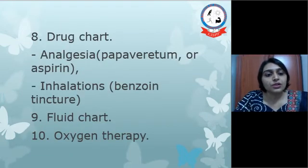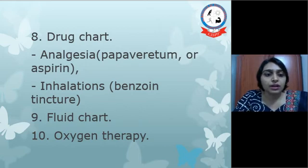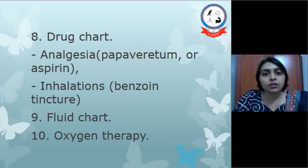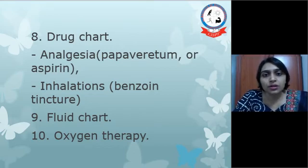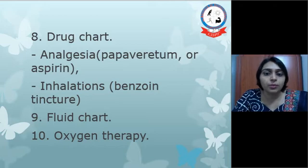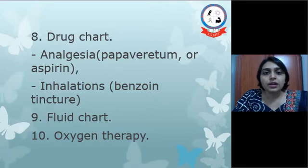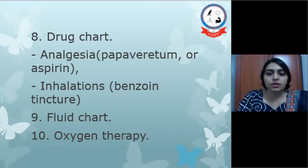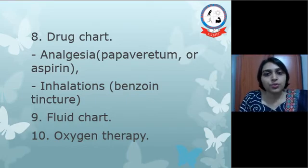Next is the drug chart. We have to check for analgesia and inhalations given to the patient. If there are thick secretions present in the sound lung or sound area of the lung, then benzoin tincture inhalations are being given. Next is the fluid chart — the amount of fluid intake and output should be checked. And last is oxygen therapy — whether the patient is being given oxygen therapy and through which mode it is being given.